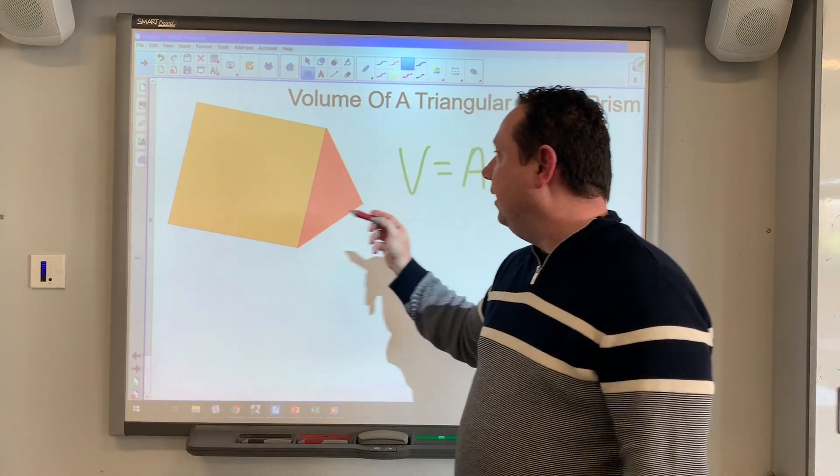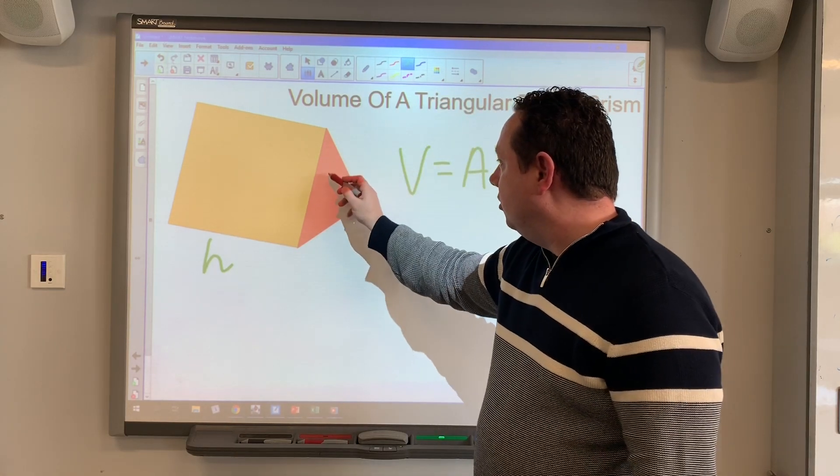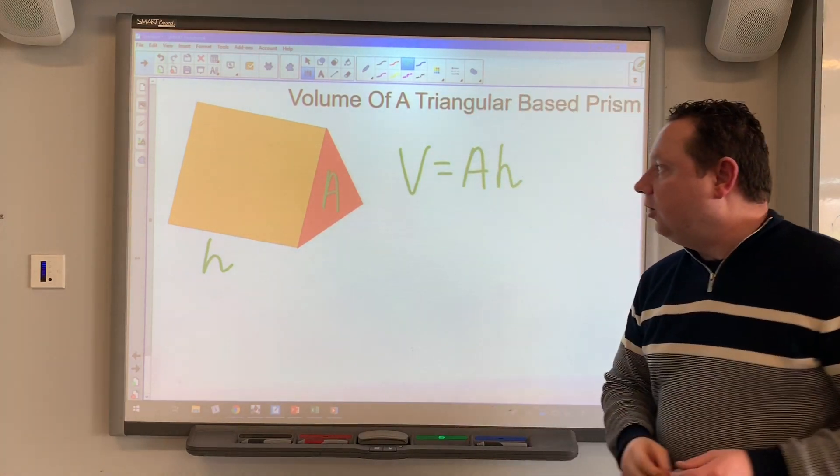So on this picture of a prism here which is triangular, that's the vertical height and then there's my cross section so I need the area of the triangle.